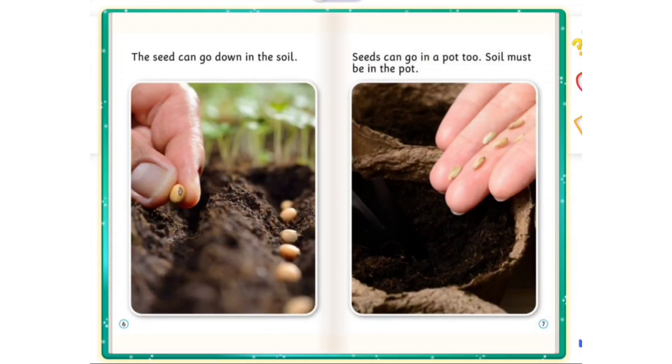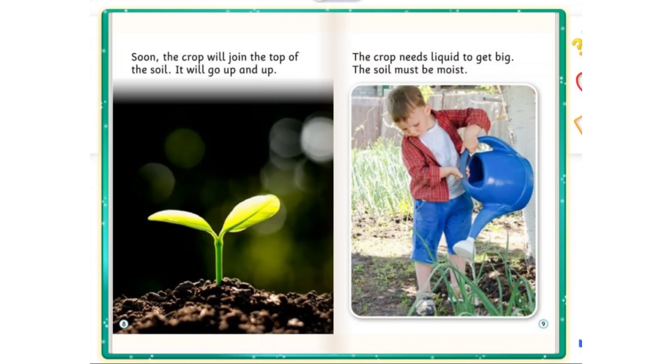The seed can go down in the soil. Seeds can go in a pot too. Soil must be in the pot. Soon, the crop will join the top of the soil. It will go up and up.